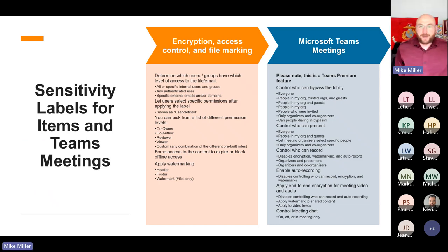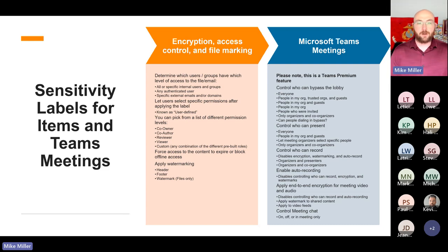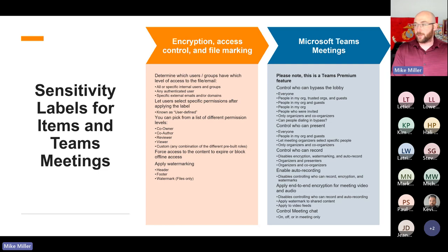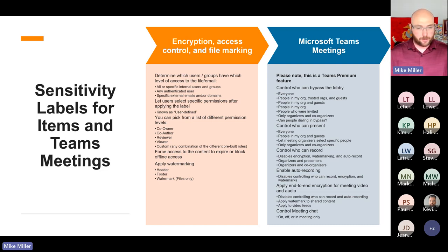Labels can be applied in different areas and they can do different things. One of the most common things people consider is encryption, but there's also access control and file marking built in. You can determine what users and groups have which level of access — you can get very granular with the controls on this data. If it's an HR file that only HR needs access to, you can build a label specifically for that, put in the HR distribution group, and only HR gets access — you can even say HR gets read-only and one specific person gets added access.